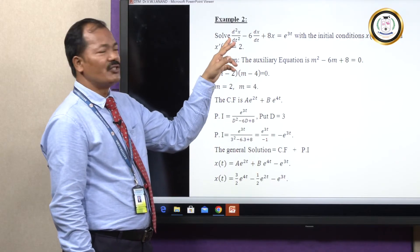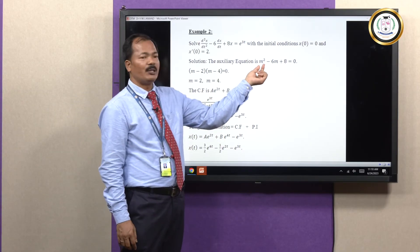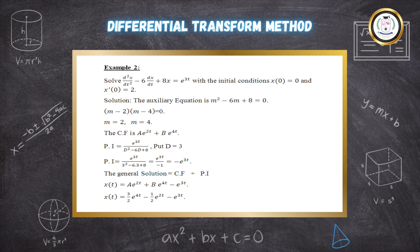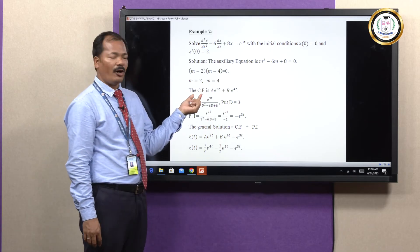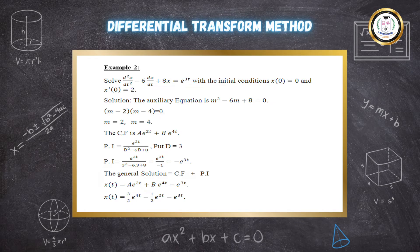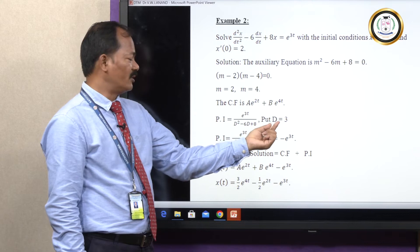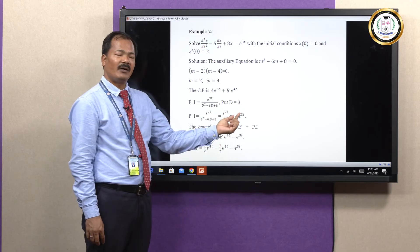The auxiliary equation is formed by substituting the differential operator D with m, giving the quadratic m-squared minus 6m plus 8 equals 0. Factoring, we get (m minus 2)(m minus 4) equals 0, so the roots are m equals 2 and m equals 4 — real and distinct. The corresponding complementary function is a e to the power 2t plus b e to the power 4t. For the particular integral, substituting D equals 3 in e to the power 3t upon (D-squared minus 6D plus 8) gives a denominator of minus 1, so the particular integral is minus e to the power 3t.